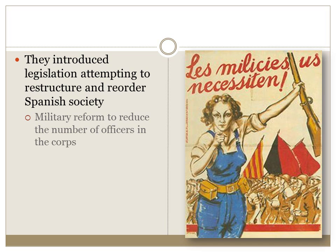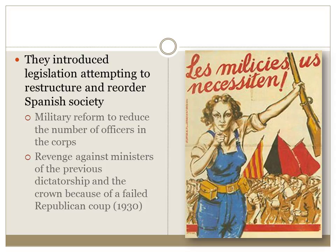They also took revenge against the ministers of the previous dictatorship. After Primo de Rivera stepped down, the Republicans had tried to stage a coup but were suppressed. Once elections were called due to massive unrest, the Republicans ousted the bureaucrats who had been running the government. Their goal was to restructure and create a modern society, and they were going to go about this in a number of different ways.